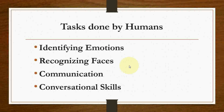Now let's look at tasks done by human beings. First, identifying emotions: humans are always better than machines because they have their own emotions and can understand them. Machines, when trained for specific emotions, cannot understand other types. Second, recognizing faces: machines can recognize face shape and color but cannot identify whom the face belongs to. Third, communication: humans are far better at communication compared to machines — for example, chatbots only respond within their trained domain.